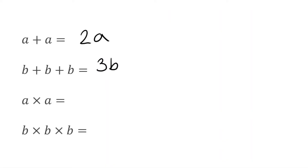When we multiply terms, we're actually affecting the indices or the power. For the next question, we've got a multiplied by a. Because we're multiplying the terms, we know we're affecting the indices. We've got two of them, so this would be a to the power of two, or a squared. Similarly, b multiplied by b multiplied by b affects the indices — we've got b three times, so that's b to the power of three, also known as b cubed.